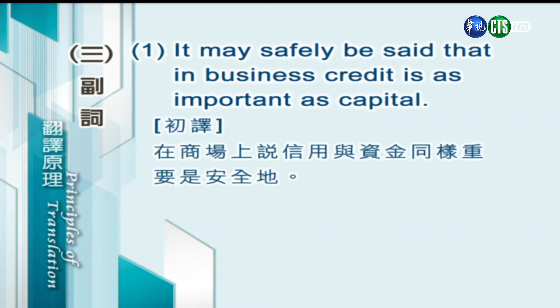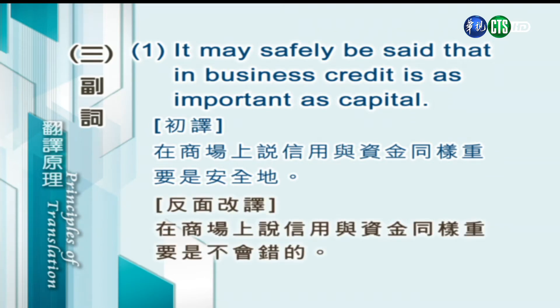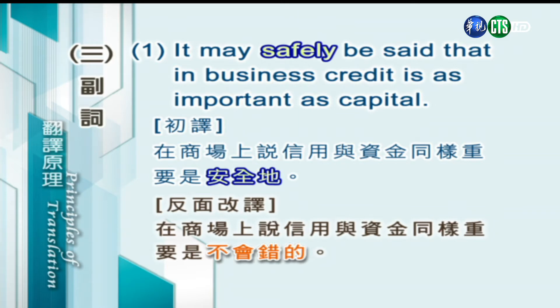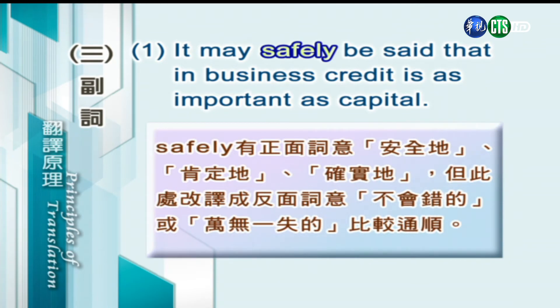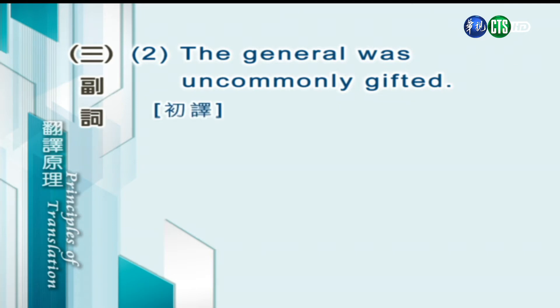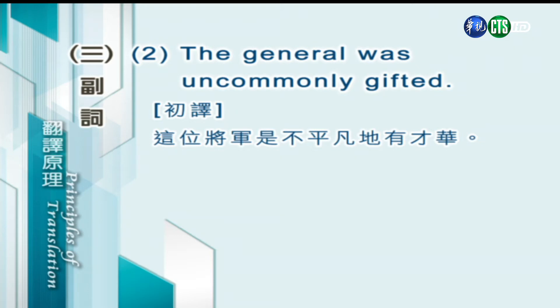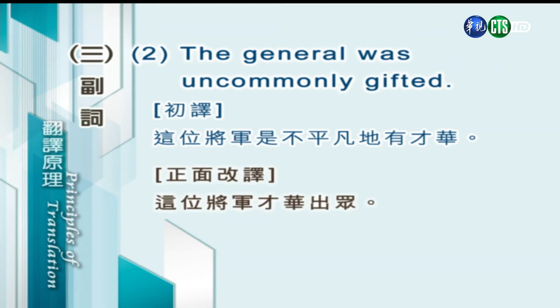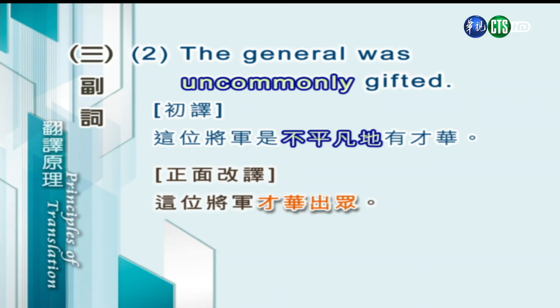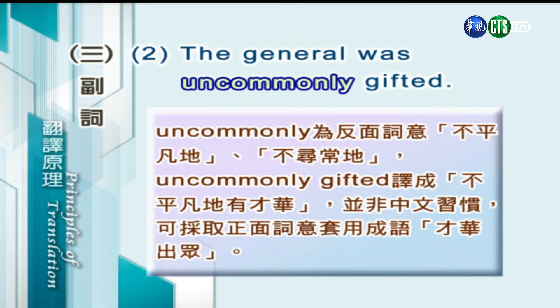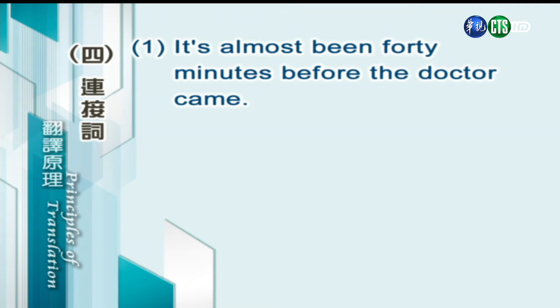第三种：副词。"It may safely be said that in business, credit is as important as capital." 直译：在商场上说信用与资金同样重要是安全的，很不通。反面改译：在商场上说信用与资金同样重要是不会错的。safely 有正面词译「安全的、肯定的、确实的」，但此处改译成反面词「是不会错的」或「万无一失的」比较通顺。"The general was uncommonly gifted." 直译：这位将军是不平凡地有才华，不是很中文。我们正面改译：这位将军才华出众。uncommonly 是反面词译「不平凡地、不寻常地」，我们可以采用正面词，套用成语「才华出众」。